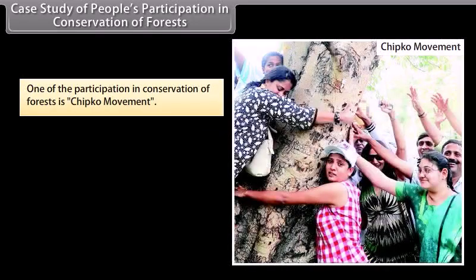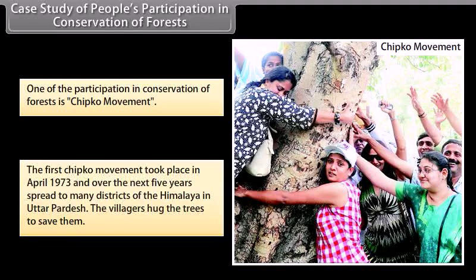Case Study: People's Participation in Conservation of Forests. One notable example is the Chipko Movement. The first Chipko Movement took place in April 1973 and over the next five years spread to many districts of the Himalayas in Uttar Pradesh. The villagers hugged the trees to save them.